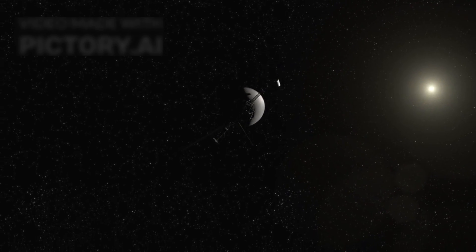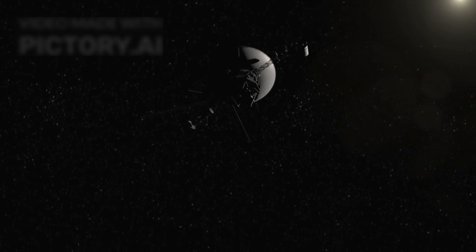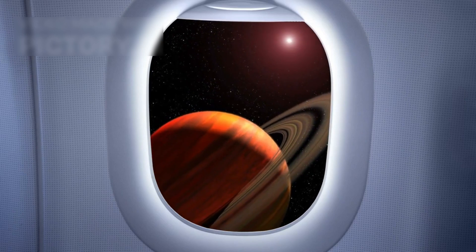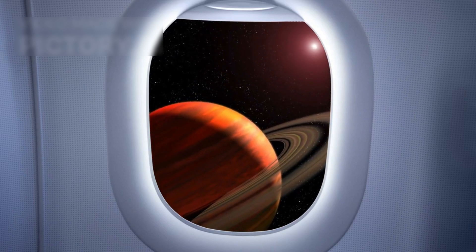On September 5, 1977, NASA launched Voyager 1, marking the beginning of one of humanity's most daring space missions. Designed to explore Jupiter and Saturn, this mission was part of a twin project with Voyager 2.